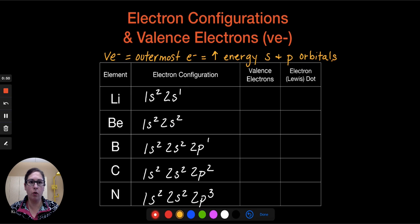And specifically, these are going to be the highest energy S and P orbitals. When we're looking at the elements in this particular chart, we see that the highest energy level is 2, and so we see that 2 is the highest for each one of these. That's not always the case, but for each of these, it's going to be 2 because we're working with elements that are in the second period.